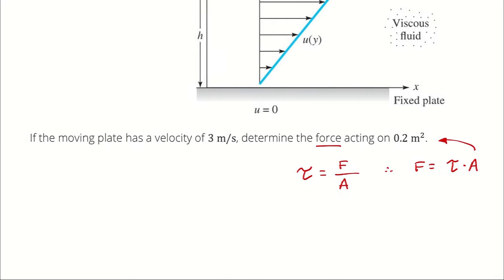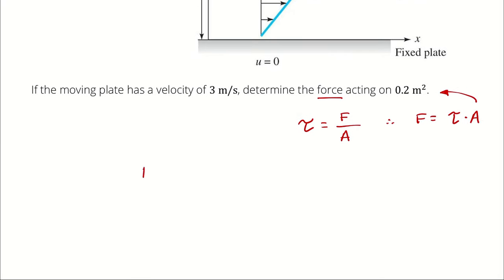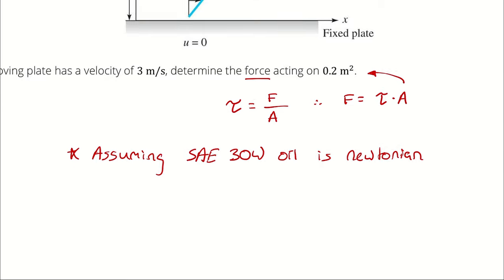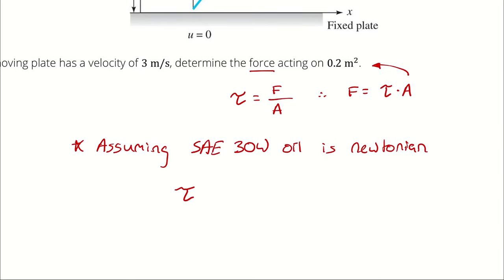If we assume that the fluid is a Newtonian fluid, then we can say that the shear stress is going to vary linearly with shear rate, and the slope of that linear line we call dynamic viscosity.